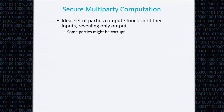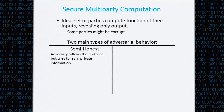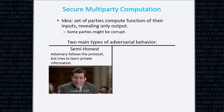There are two main ways to model corrupt behavior. The first is semi-honest corruption, or passive corruption, in which we assume that the corrupt parties must follow the protocol, but they might try to learn some information from the messages they receive.